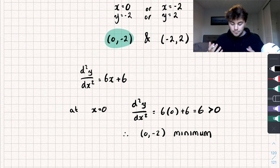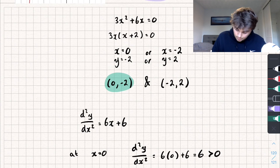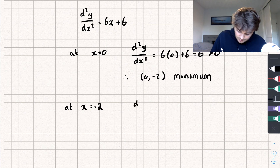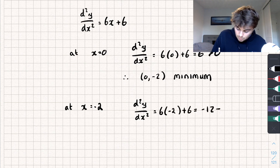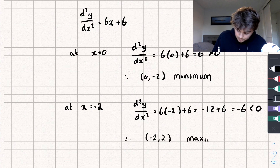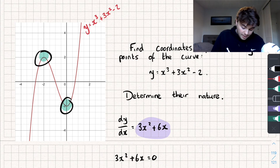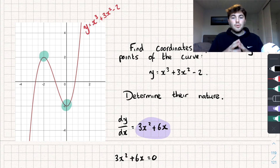Now doing the same for the other coordinate: at x = −2, d²y/dx² equals 6(−2) + 6 = −12 + 6 = −6, which is less than zero. Therefore the coordinates (−2, 2) is a maximum. Looking at the curve you can see that's our minimum and that's our maximum. Hopefully that was useful — if it was, subscribe to my channel and go check out all my other videos. Thanks for watching.